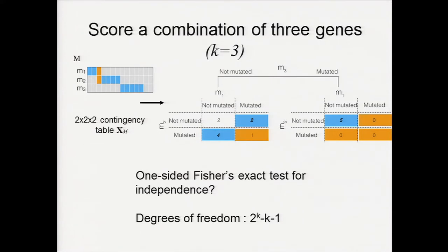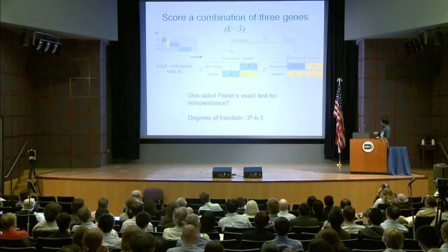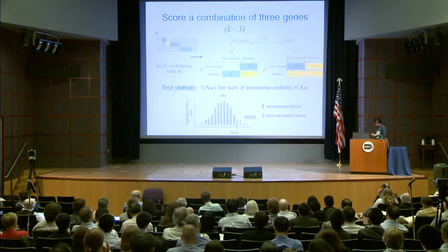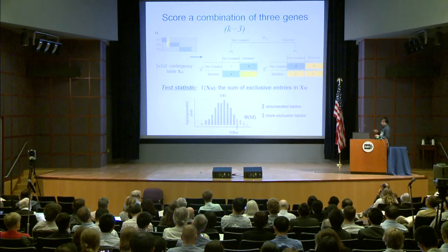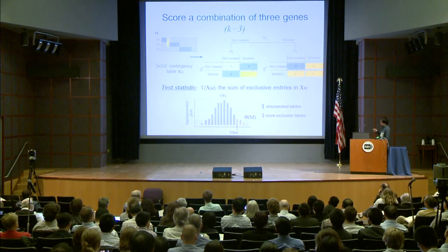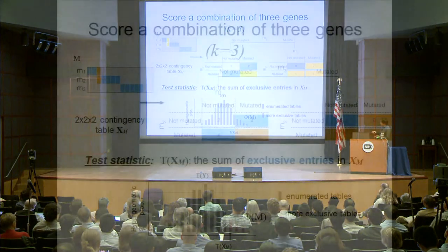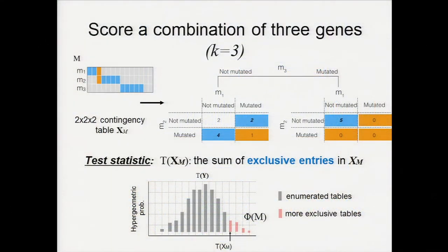Rather than testing independence, we define our test statistic as the sum of the exclusive entries in this table — the sum of those blue cells. We then enumerate all tables and sum over the table probabilities that are as exclusive or more exclusive than our test statistic.